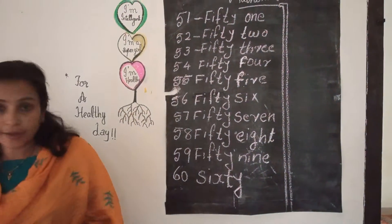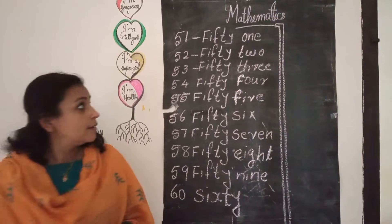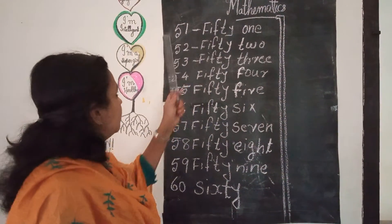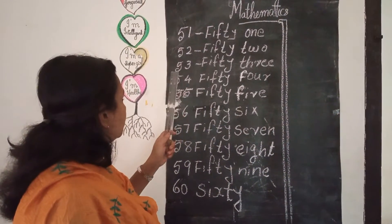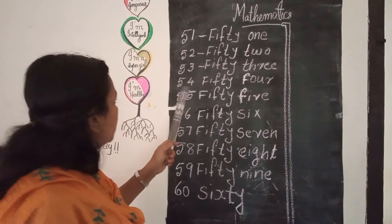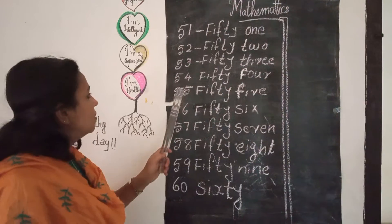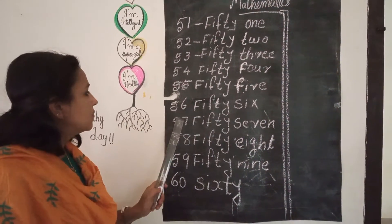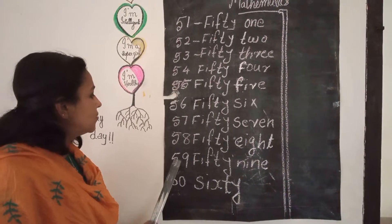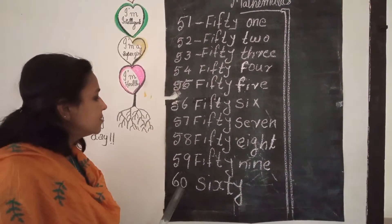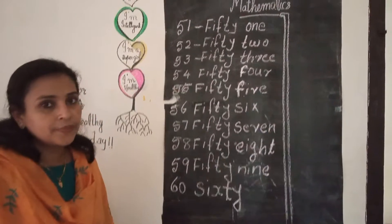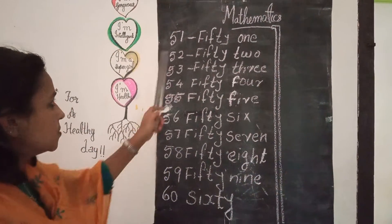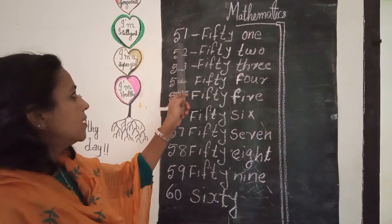Look children: 51, 52, 53, 54, 55, 56, 57, 58, 59, 60. Now we will learn number names starting with 51.